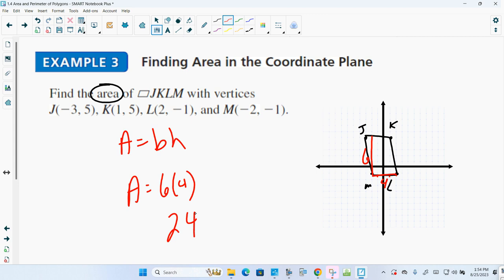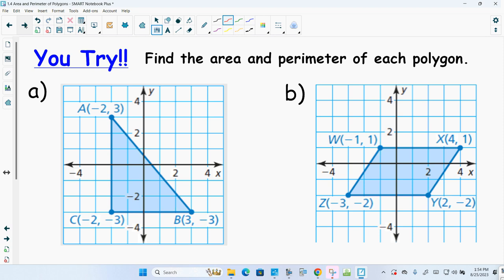You try. Go ahead and hit the pause button and see if you can do these by yourself. All right, welcome back. I want to find the area of this triangle. If you don't remember, the area is half base times height. So this side is 6. This side is 5. So the area of this figure is half times 6 times 5. So the area is 15.